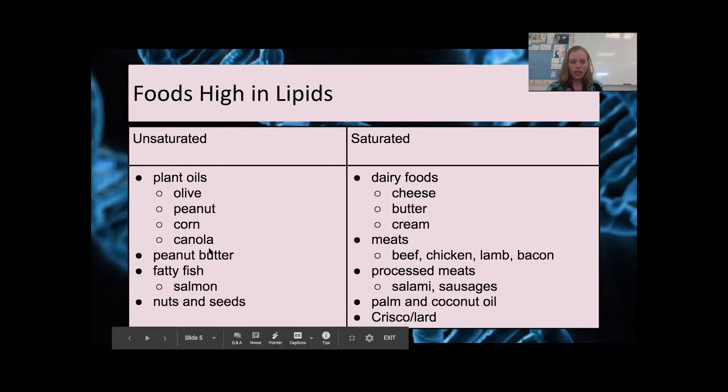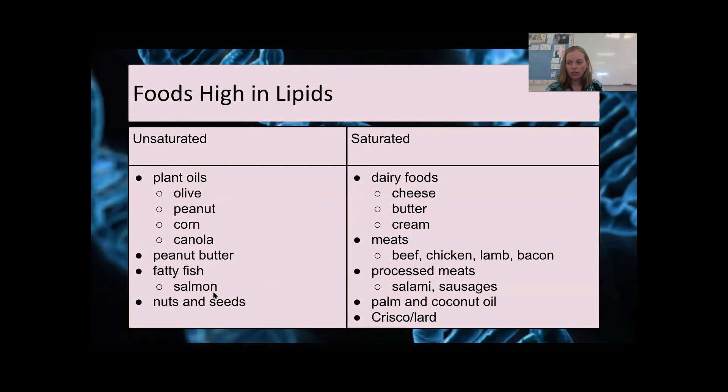Foods that are hot and unsaturated fats are typically going to be your plants and your plant oils. Peanut butter has some unsaturated fats. It comes from peanuts, nuts, and seeds, but we also have fatty fish, and I mentioned how salmon use unsaturated fats because it has a lower freezing point, and that's going to help them in these very cold climates.